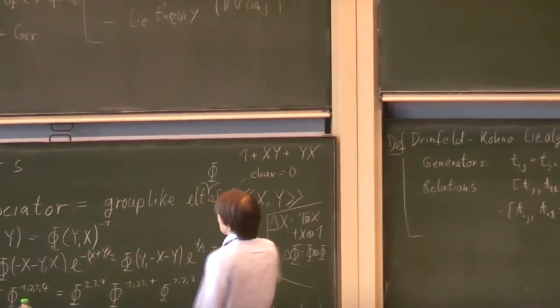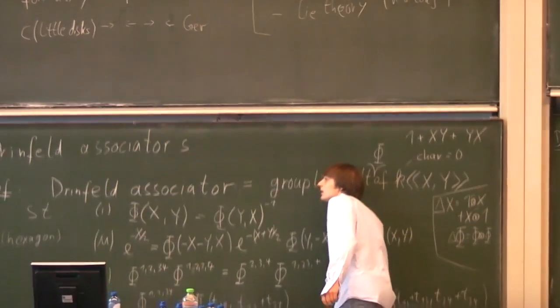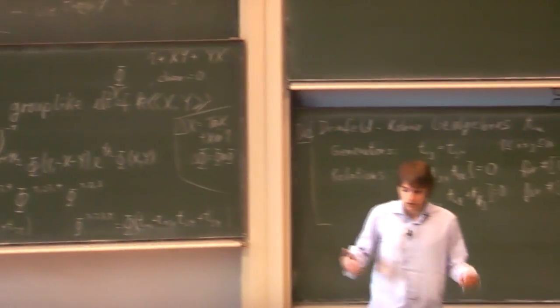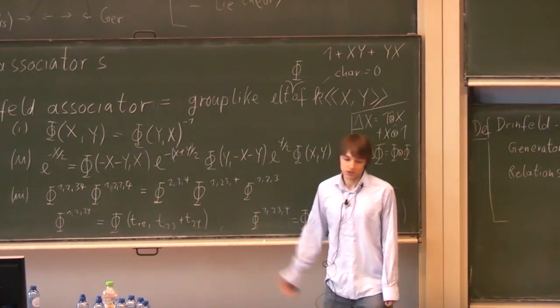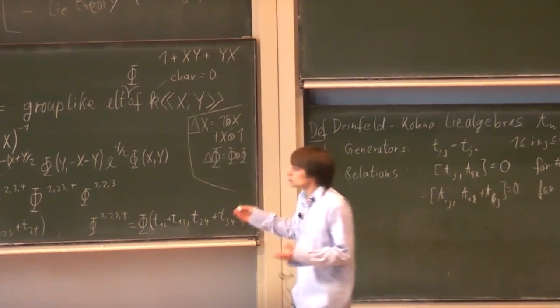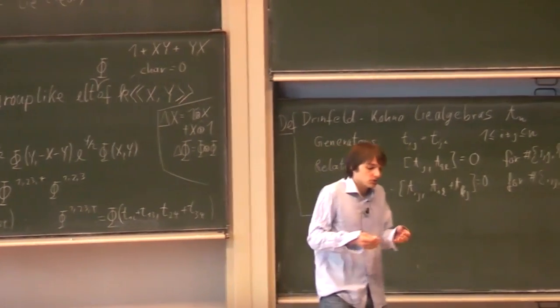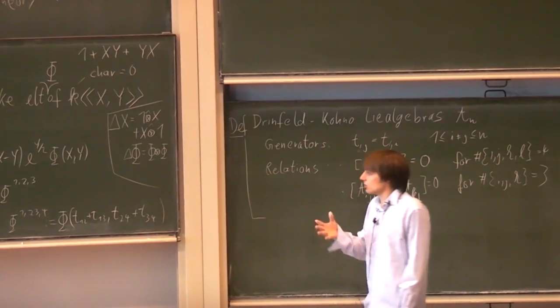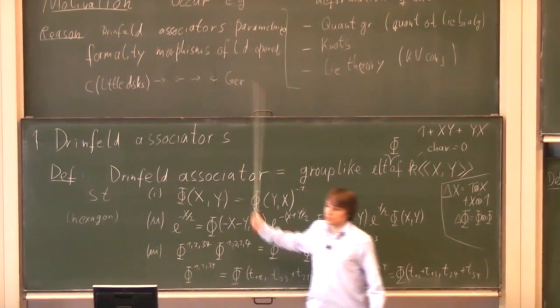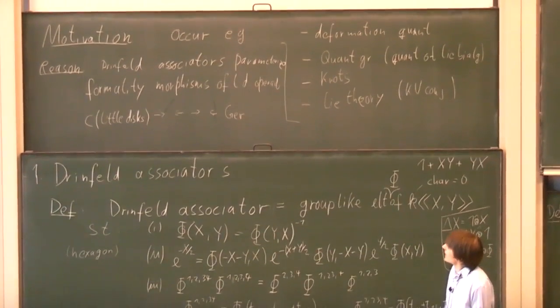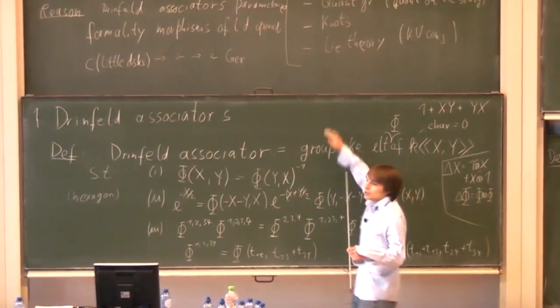This is important because the little disks operad is a model for the E2 operad, and these kinds of operads are abundant in homological algebra. Whenever you want to relate something governed by one side to something on the other side, you have to solve these equations. Making it worse, these equations are rather difficult to solve — there is no known algebraic way to do so. The only known ways to solve them use transcendental methods, requiring concrete integral computations at some point.